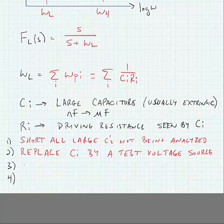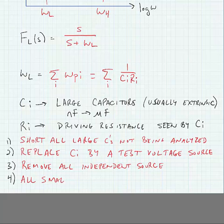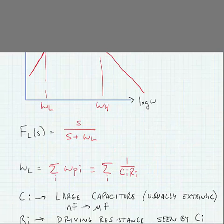Now, in the meantime, we need to remove all independent sources. This means that our voltage sources become short circuits and our current sources become open circuits. And finally, all small capacitors are open circuited. This makes sense because at low frequencies, their impedances will be very high.